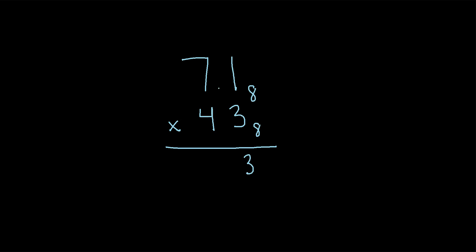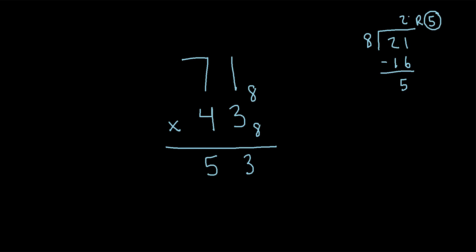Here's the trick: when we're multiplying values in an octal system, if we get a value that is 8 or greater, we have to ask ourselves how many eights go into that product. We got 7 times 3, that's 21. How many eights go into 21? That would be 2. Eight times 2 is 16, so 21 minus 16 is 5. Our remainder is 5, which is what we write here, and the whole number from the division — this 2 — gets carried over to the next column. We then bring this 2 down, since there's nothing else to add.